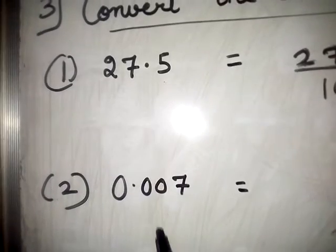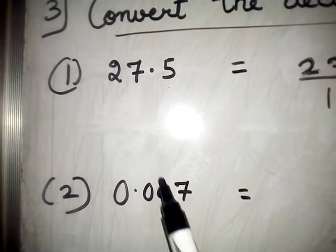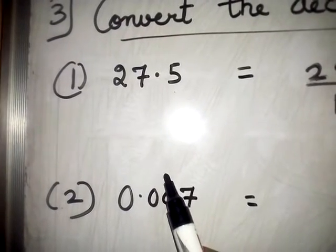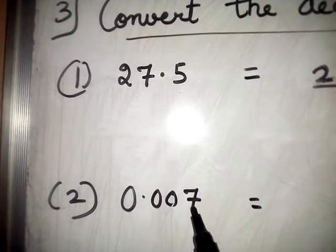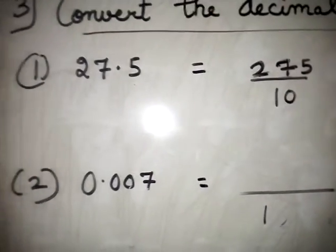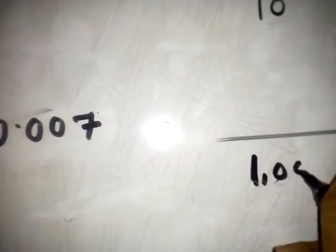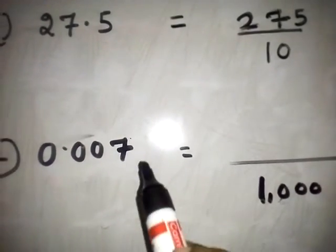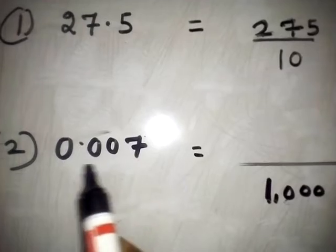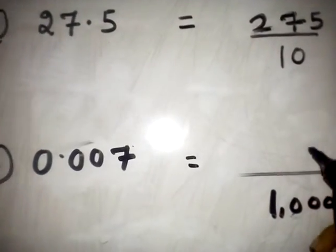Second one. How many decimal places are there? Count: 3 decimal places. This is the 1 upon 10 place, this is the 1 upon 100 place, and this is the 1 upon 1000 place. So the denominator will be 1000. Write 1000 as the denominator. And write the number without the decimal point. Here 0 is there — 0 does not have any value. So write only 7.